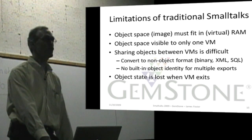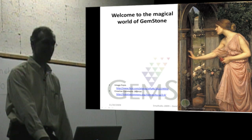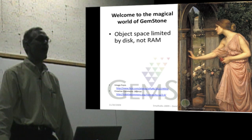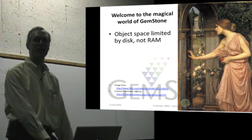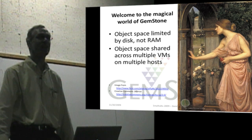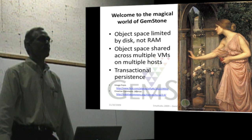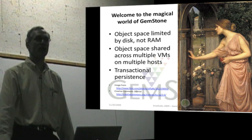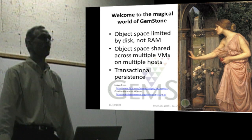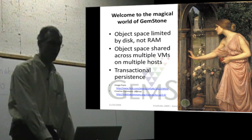I'd like to invite you to enter the magical world of GemStone, where object space is limited by disk rather than RAM — as much as you can fit on disk, you can have an object space that big. Your object space can be shared across multiple virtual machines, and these multiple virtual machines can be running on multiple hosts, so you can distribute it. You have transactional persistence, so that when you commit a transaction, if everything crashes, you don't lose anything saved through a transaction. You don't have to copy the entire memory space into a file — you can just save things transaction by transaction.